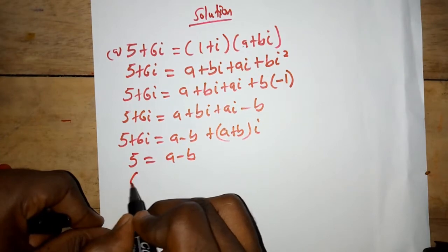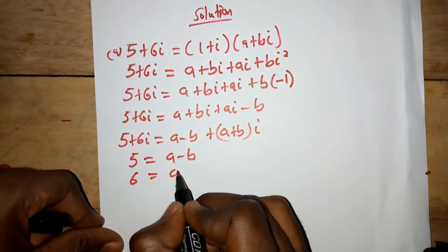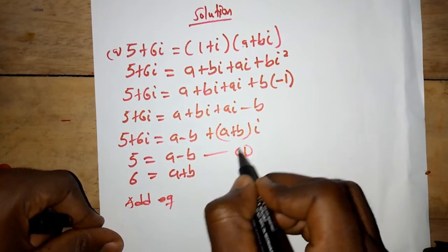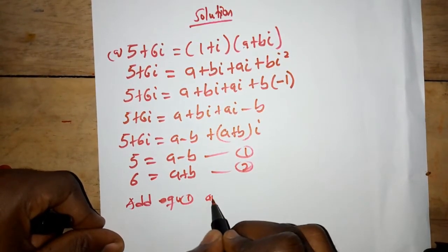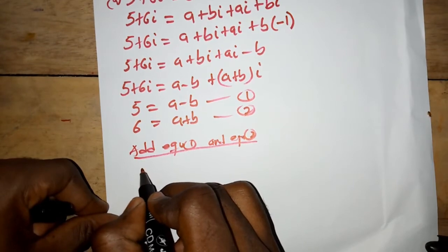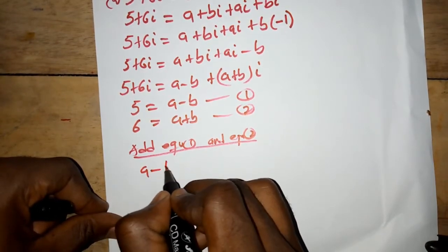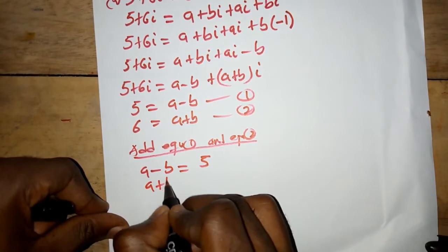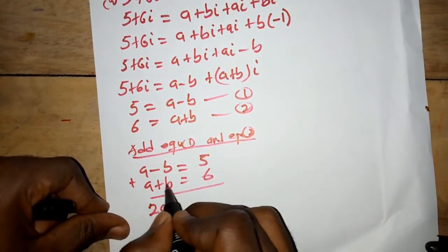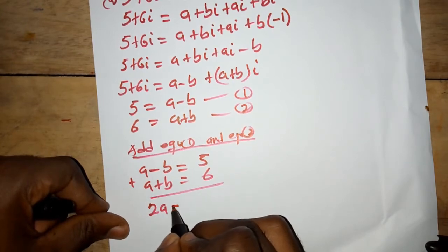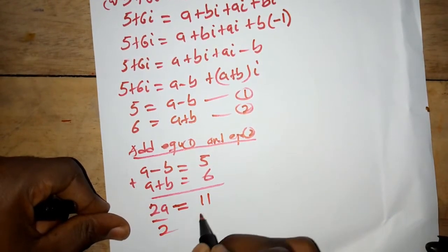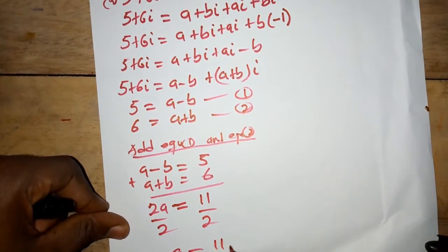And six equals a plus b. Now we add equation one and equation two. Adding them, we have a minus b plus a plus b: the b terms cancel, giving us two a equals five plus six, which is eleven. Dividing both sides by two, we get a equals eleven over two.